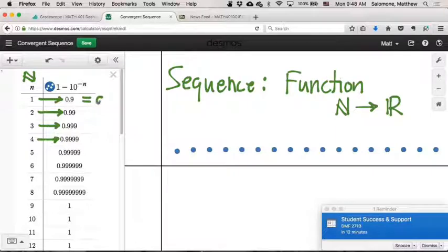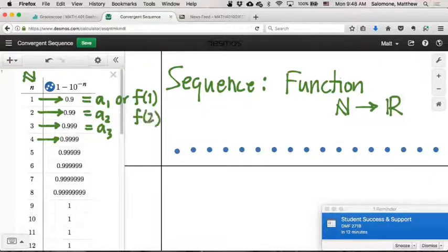And often what we'll do is we'll use notation like a sub 1, a sub 2, a sub 3. In place of what we might otherwise, if we were thinking about this as a regular kind of function, we would call these something like f of 1, f of 2, f of 3.